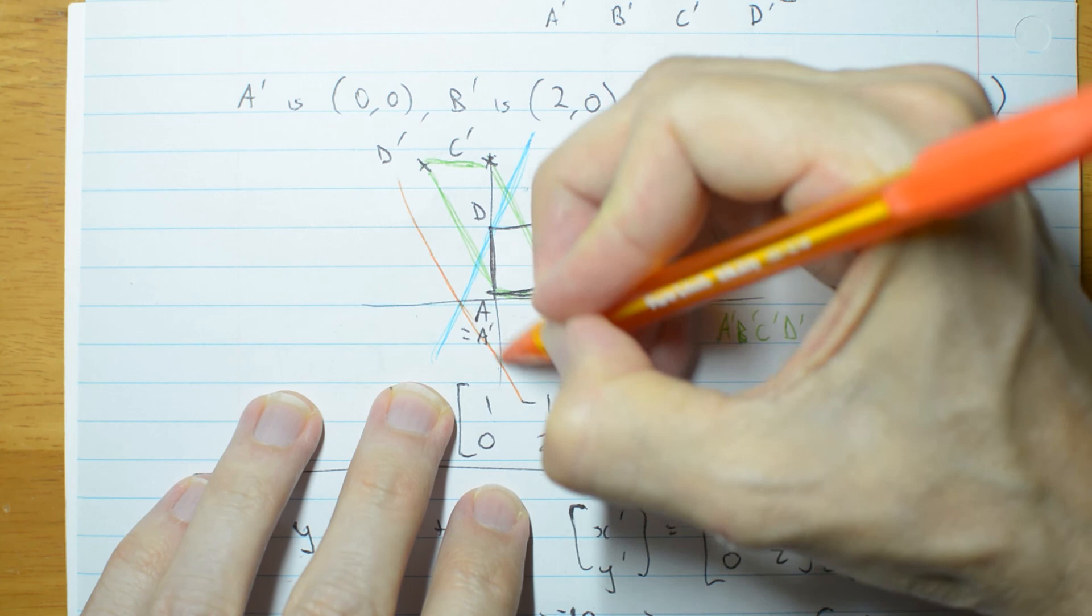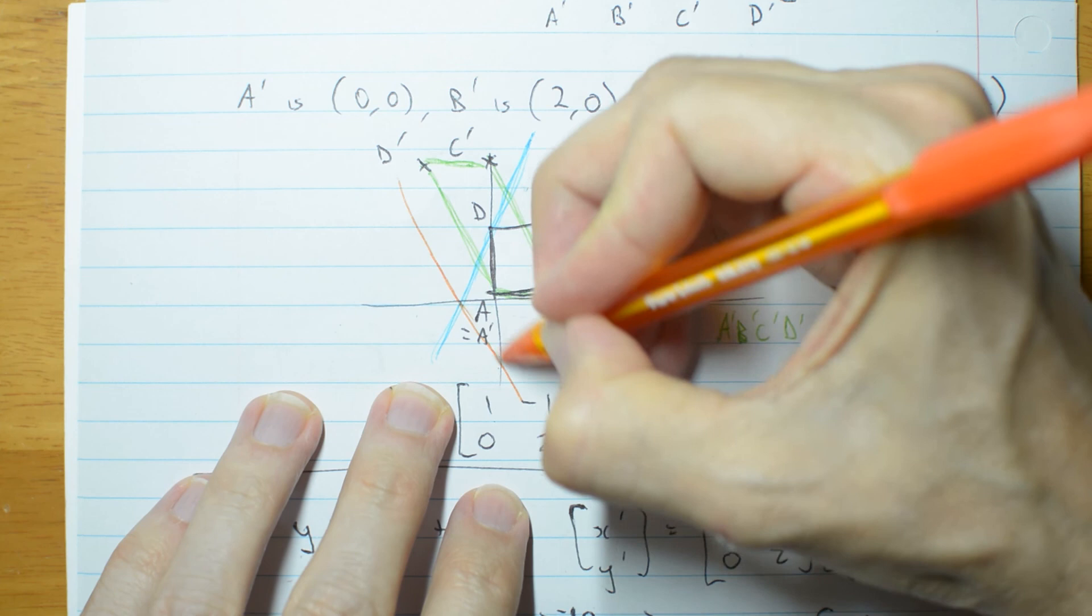Now I'm not being very precise here. But the same transformation that took this square into that parallelogram, also took this line and turned it into that line.